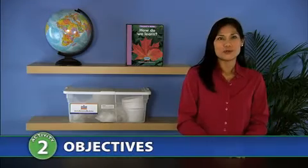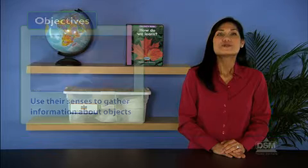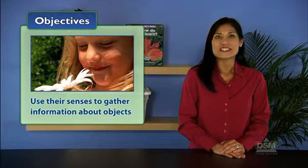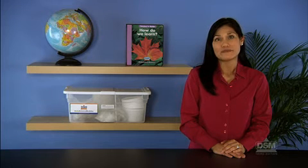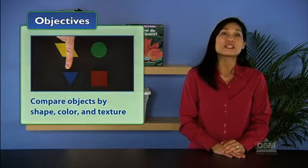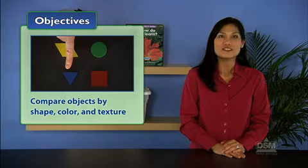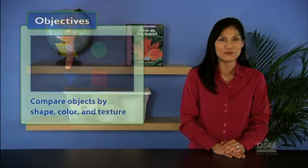In Activity 2, Comparing Objects, Alike and Different, students use their senses to gather information about objects. First, students discuss the properties of objects using descriptive vocabulary, and then they compare objects by shape, color, and texture.